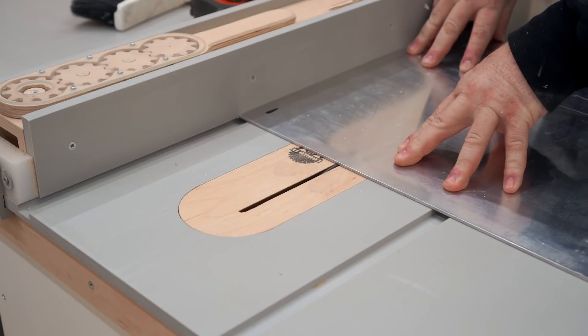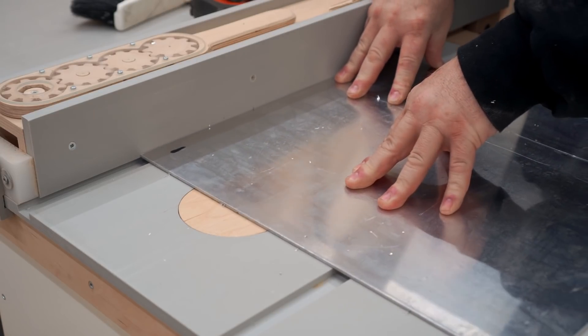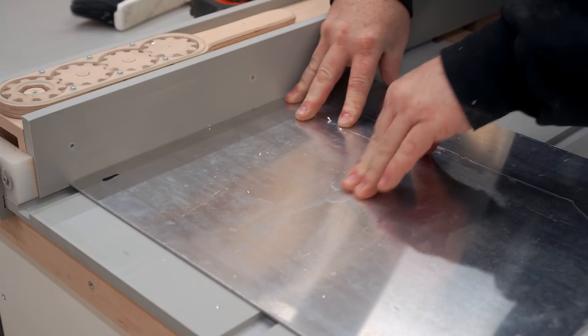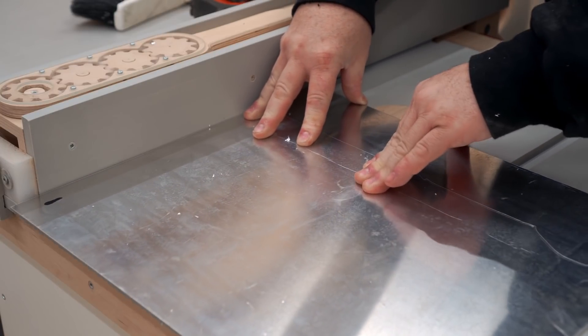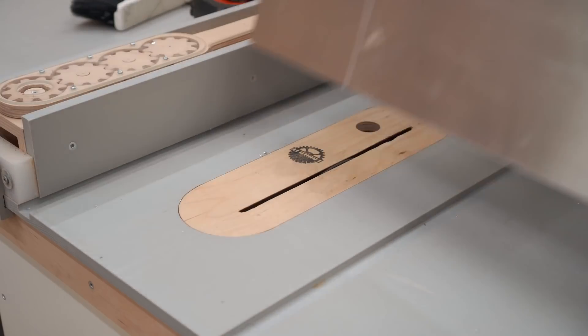Now what I'm doing here is I'm making dados in the bottom panel and that's for dividers that will go in. So I've got the blade set to cut about halfway into the material and I'll make two cuts so that I get it to the right width.